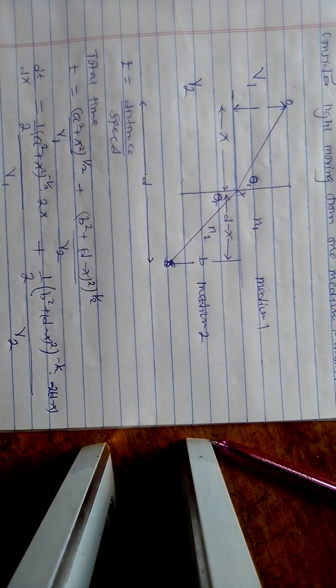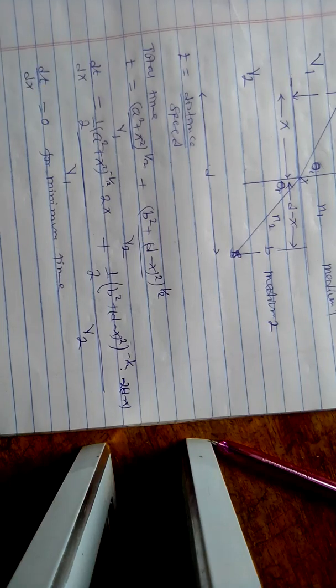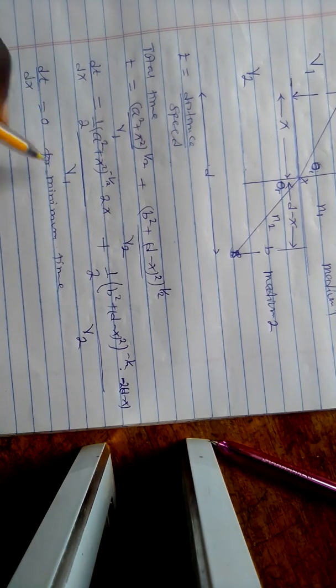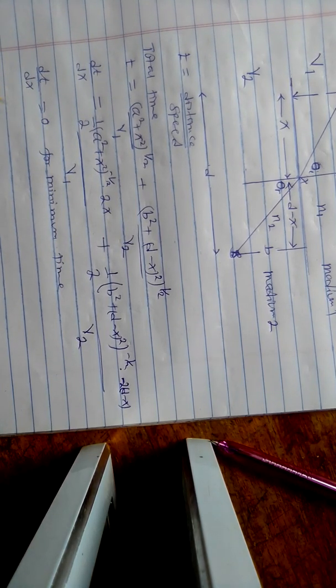We are looking at the path taken by the minimum time, the path that takes the minimum time, which is from Fermat's principle.